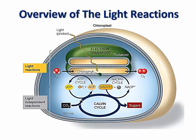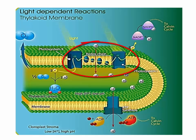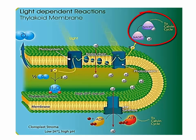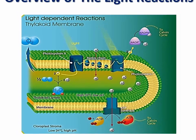Let's zoom in on one thylakoid and look at its membrane. We see that the light-dependent reactions involve two general processes. The first is reduction reactions, whereby an energized electron released by chlorophyll A participates in a series of redox reactions in an electron transport system, resulting in the conversion of the electron acceptor NADP+ to NADPH. The second process is photophosphorylation, whereby the electron transport system is coupled to ATP production in the thylakoid membrane by chemiosmosis, in a manner quite similar to aerobic respiration.